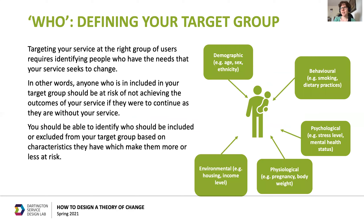Being clear about who you're going to serve is crucial — people with different needs require different services. A general rule is that the less complicated or less serious the problems are, the more ambitious you can be with the outcomes. The more complicated or serious the problems are, the more intensive or lengthy an intervention might need to be. It's important to bear in mind that in the world of scarce resources, ruling some people in for your service means ruling some people out. This can feel really uncomfortable but there are sound impact-focused reasons for doing it.